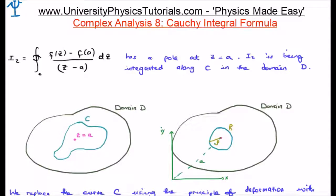So, I've sketched that at the bottom of your screen. So, let's say we have our arbitrary curve c here. c is inside the domain d, and it is going around the point z equals a where we have our singularity or our pole.